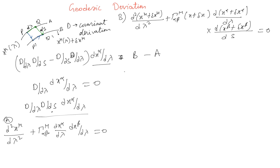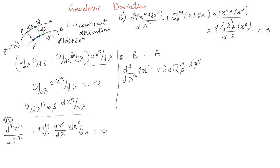We are interested in B minus A — how they differ. Without going through all the mathematics, the result looks like: d²(δx^μ)/dλ² + (∂_ρ Γ^μ_αβ)(dx^α/dλ)(dx^β/dλ) δx^ρ plus additional terms.